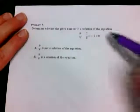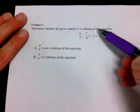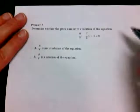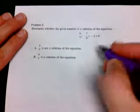For this problem, we are trying to determine whether 9/7 is a solution to the equation (7/9)x - 1 = 0. So we're going to take 9/7 and plug it in for x.